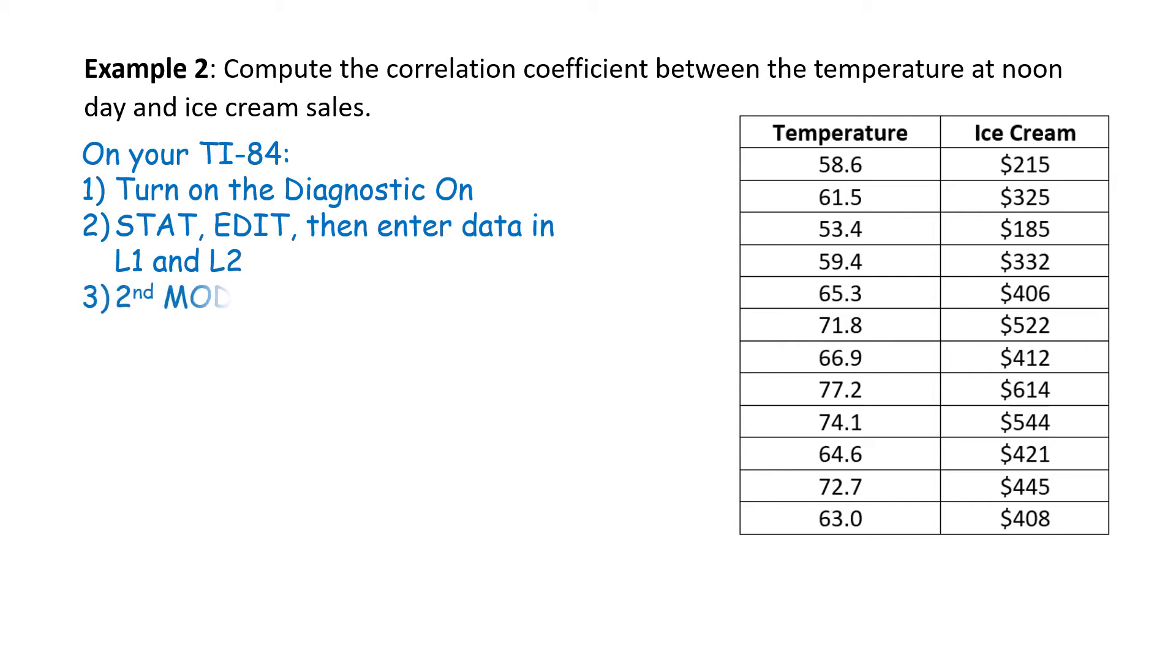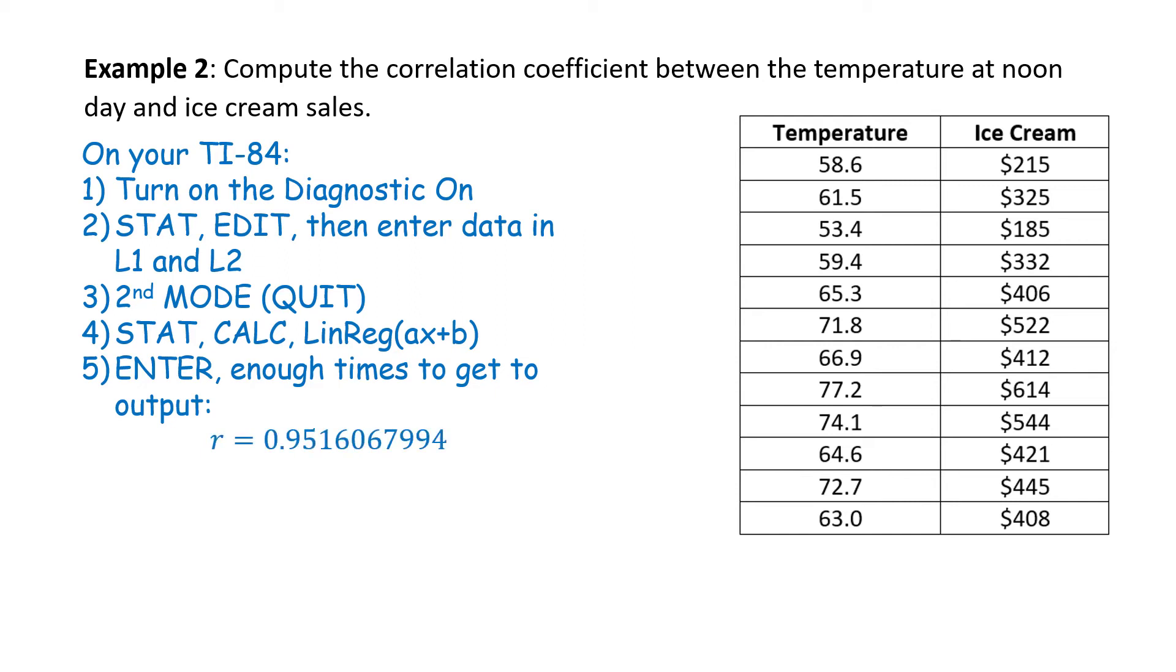Next, press 2nd mode. That takes you to quit so that you get out of this screen. Next step. Press STAT again. This time scroll right and select CALC. And then drop down a few lines to LIN REG. Select enter. And then continue to hit enter enough times until you get an output. The last output on the screen should be R equals 0.9516067994. That is the correlation coefficient.